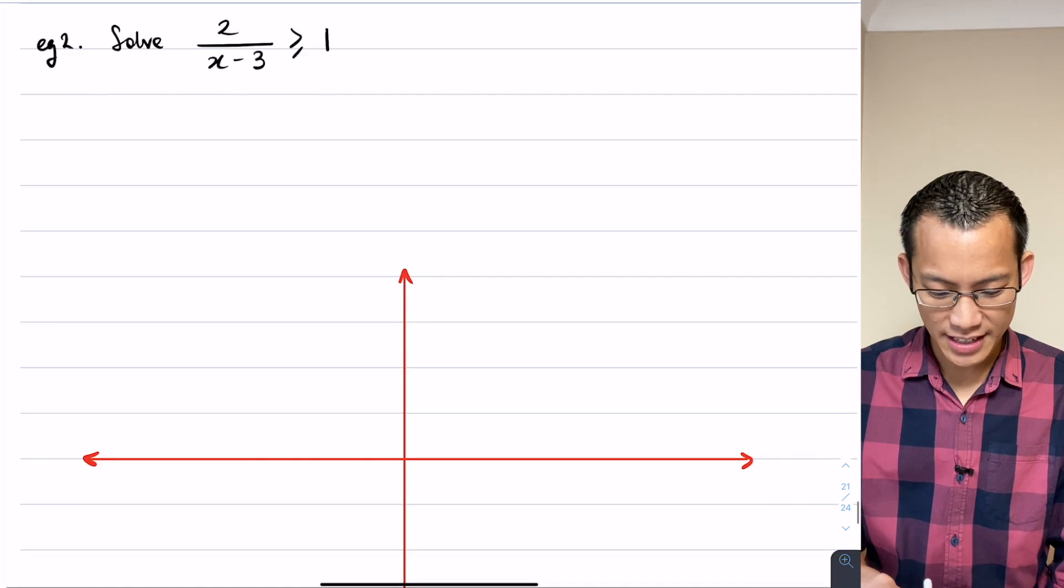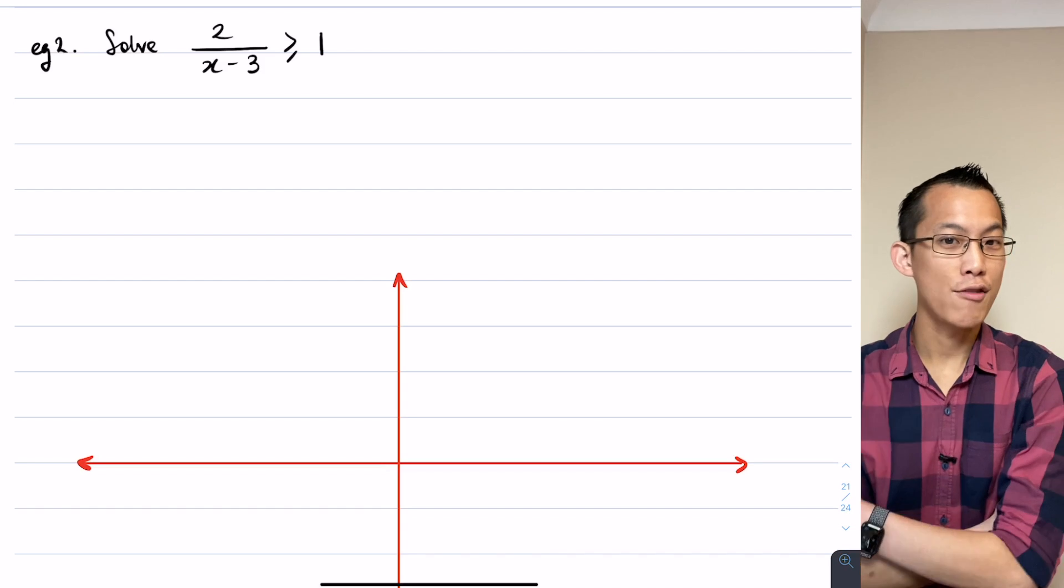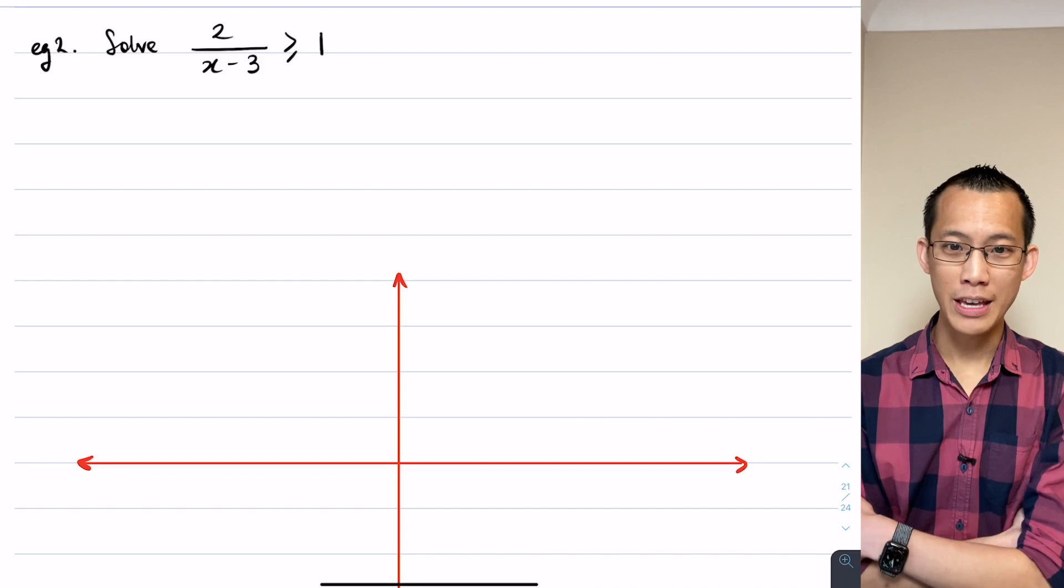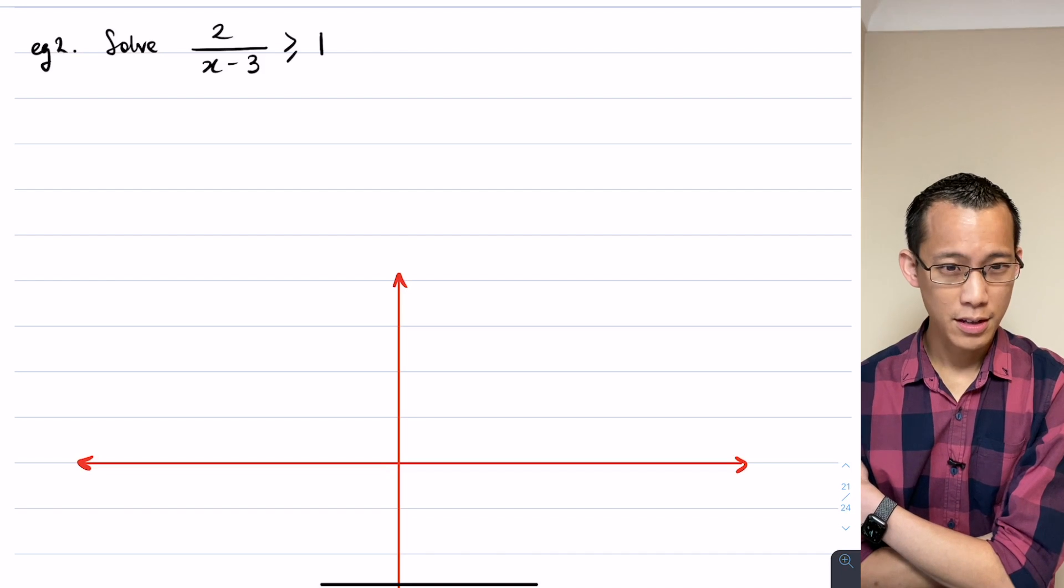Alright, so second example here and then I'm going to set you loose on the exercise. This is a rational function like the kind we were looking at yesterday, much simpler than the harder example we did. So can we work out what this thing looks like?